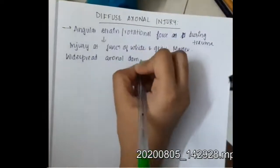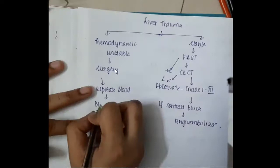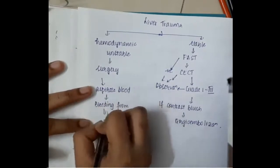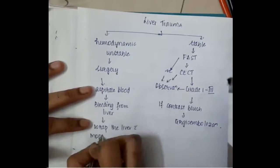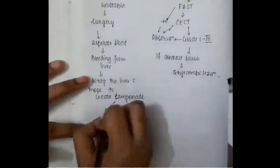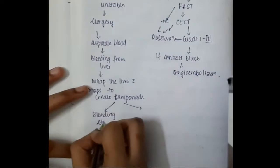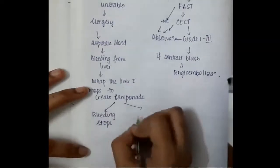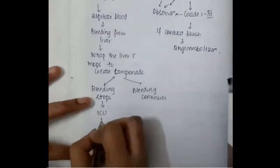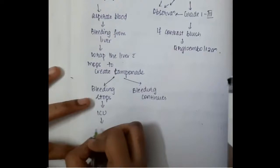If the patient is hemodynamically unstable, we should do surgery. In surgery, we first aspirate the blood. If there is bleeding from the liver, we wrap the liver with wraps to create a tamponade. The main aim is to make sure the bleeding stops. If the bleeding stops, there are two conditions to consider.